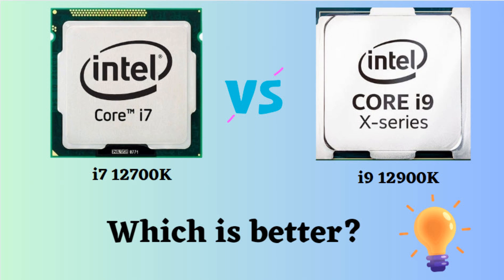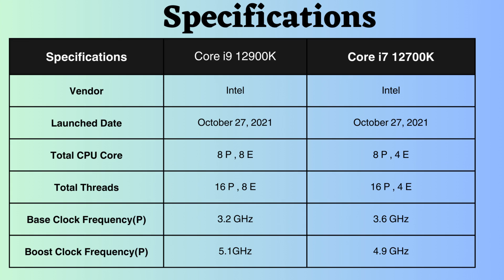In this video, I will compare the Intel Core i7-12900K and Intel Core i7-12700K, highlighting their differences, and then provide a conclusion to help you determine which one is the better choice. Both of these are powerful Intel processors and they have their own strengths as well as weaknesses. So let's look at them.